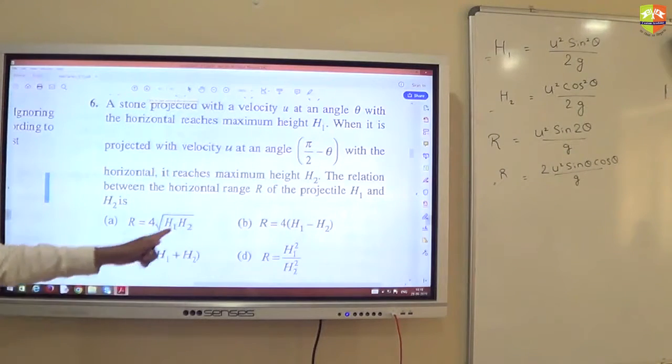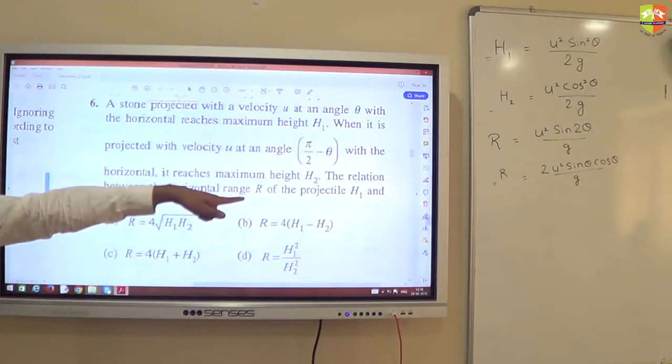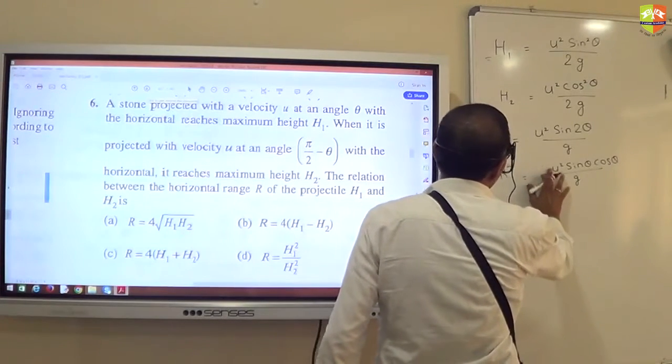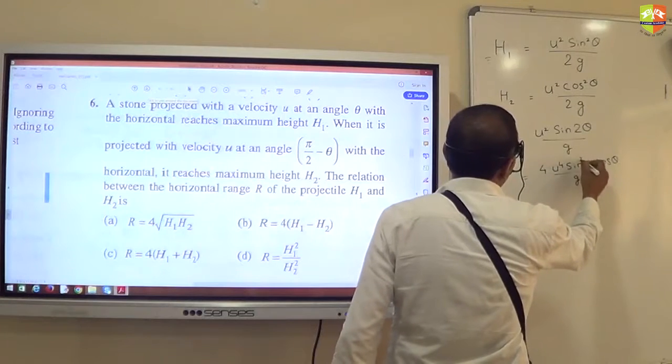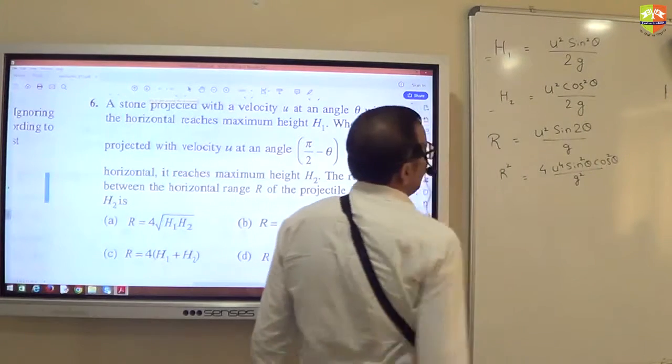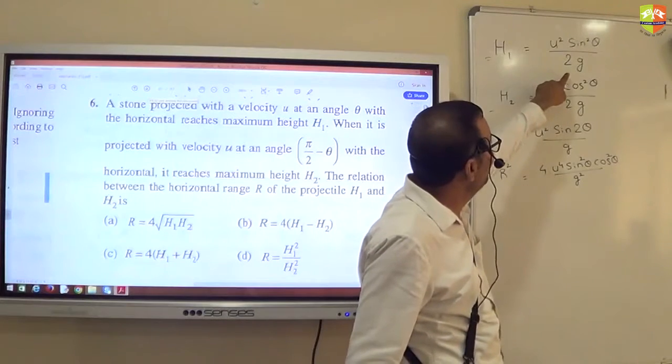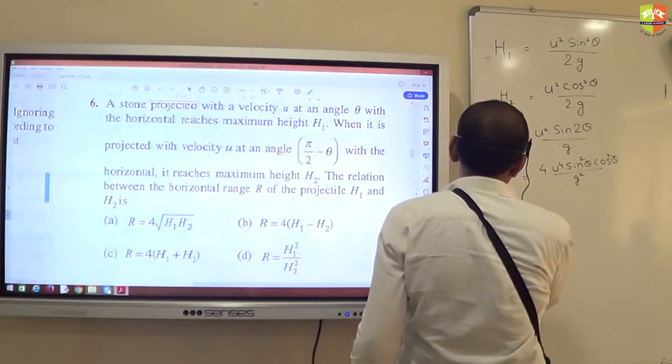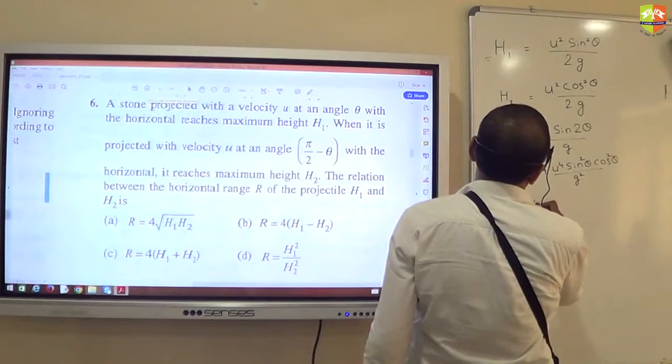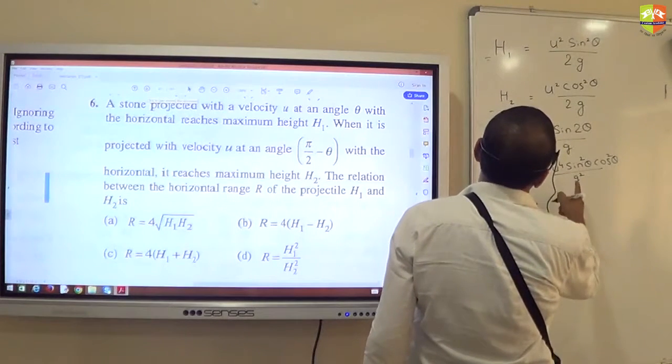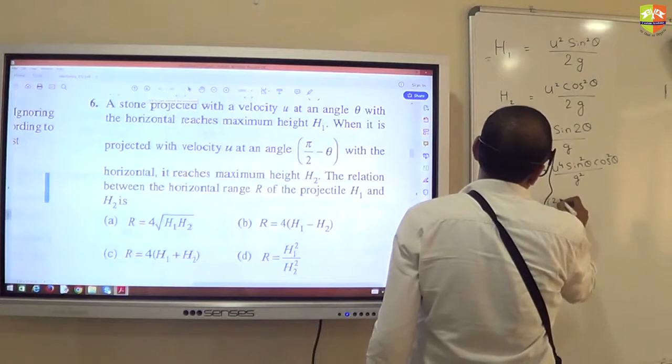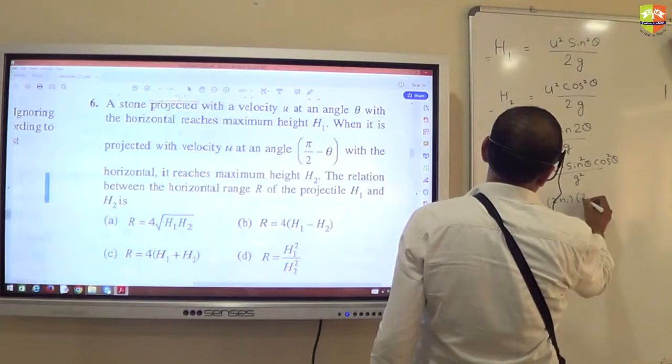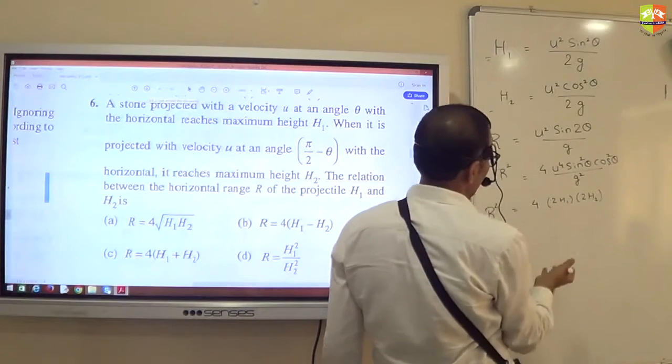This is your R. Now look at the values of h1, h2, and R. What will come in your mind? I need to eliminate θ. I need to find the relation between h1, h2, and R. So how to eliminate it? If I square R, so R² will be 4 times u⁴sin²θcos²θ/g².